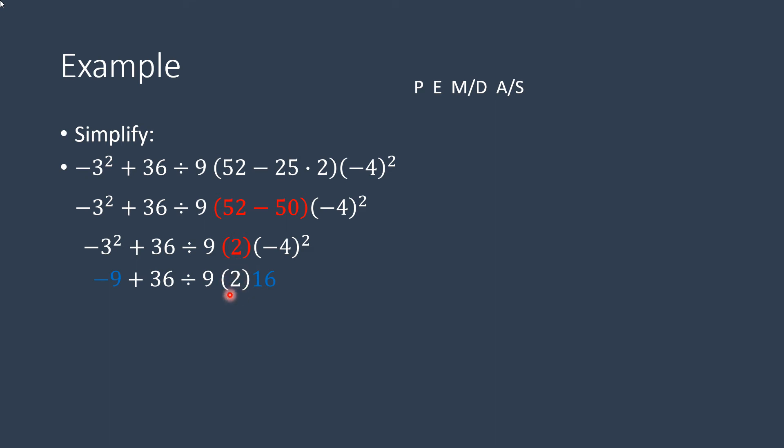This parentheses is really just multiplication. So we'll do 36 divided by 9 times 2 times 16. We do division first because that appears first. So we're doing multiplication or division right now. So 36 divided by 9 is 4. Then we'll do 4 times 2, which is 8. And then 8 times 16, which is 128.